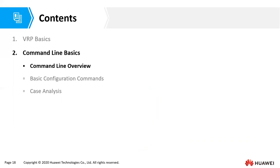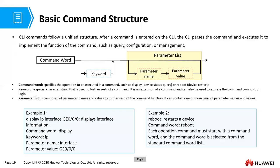Our commands basically have a command word, a keyword, and then the parameter list. The parameters are normally a parameter name and parameter value.